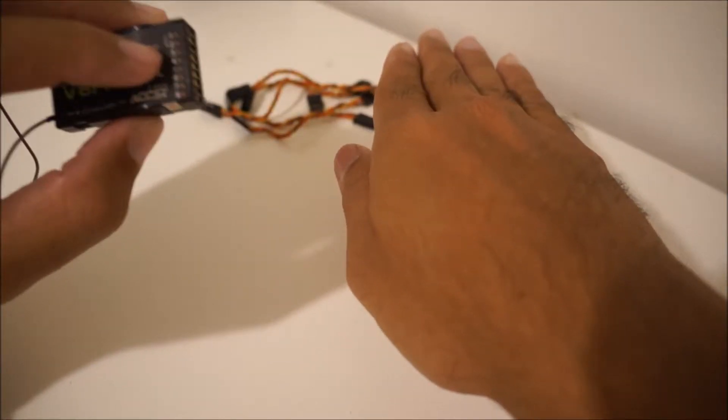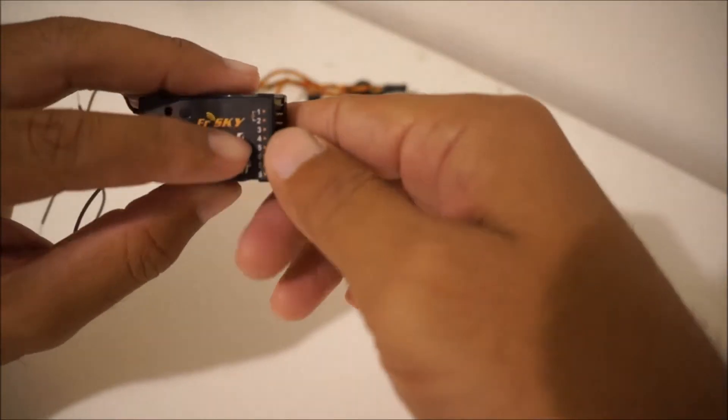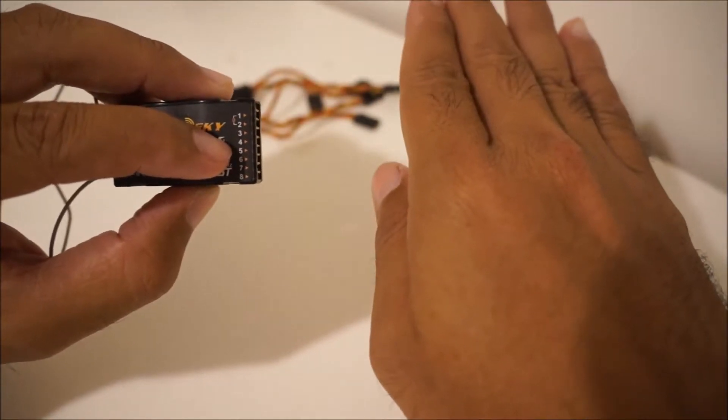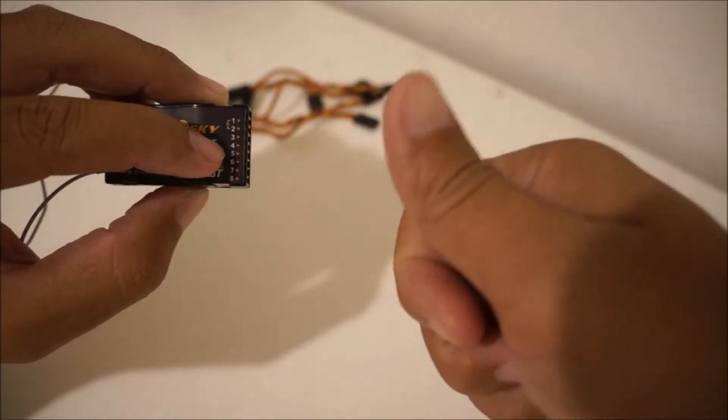Number three, that would be the rudder. That means your quadcopter, it controls the yaw, turn left to right. And the last, well not the last, but second to last is number four, which would be the throttle. That means how much power you're giving your motors so you can go up or down.